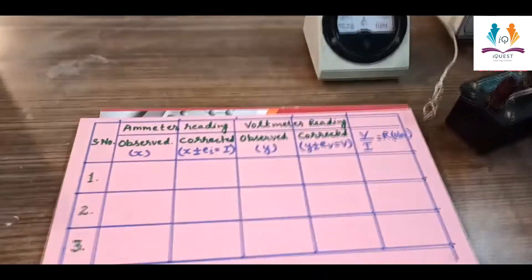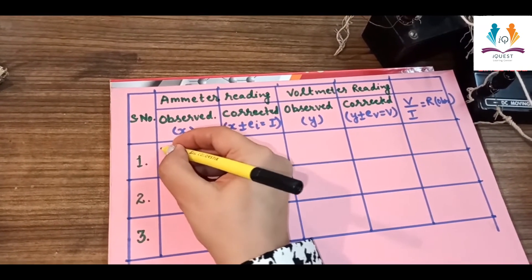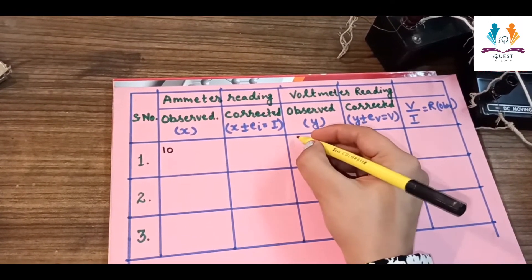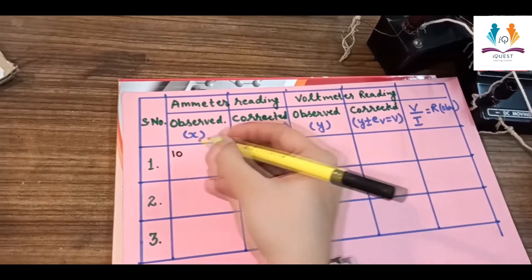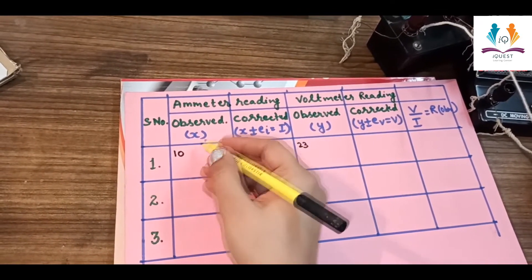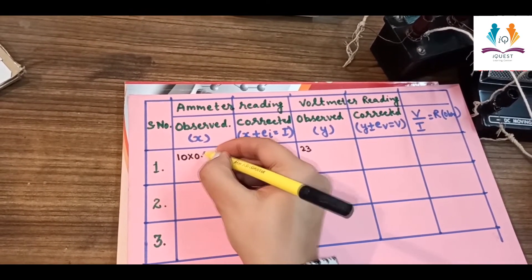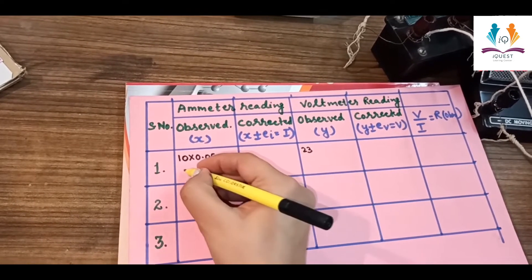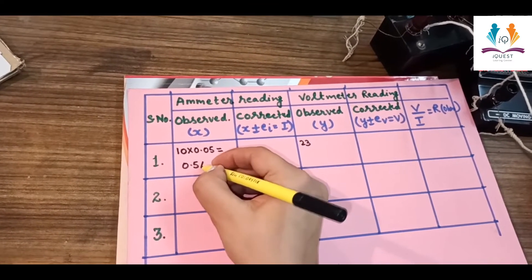Now let's do the calculation. The ammeter reading was 10 divisions multiplied by its least count of 0.05 ampere, which equals 0.5 ampere.